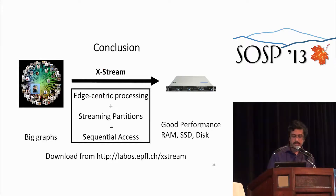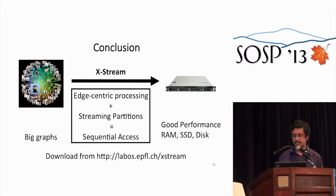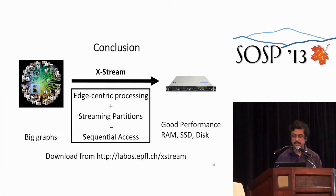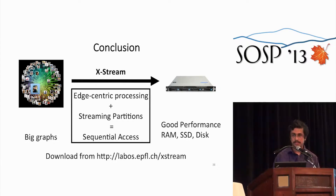In conclusion, X-Stream allows you to process huge graphs on a single server using edge-centric processing. We iterate over edges and streaming partitions, which makes accesses largely sequential and gives good performance on RAM, SSD, and disk. It's available for download — please try it and let us know what you think.